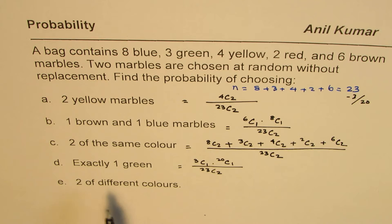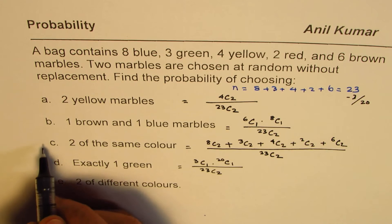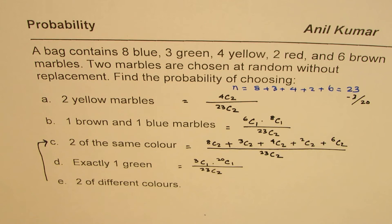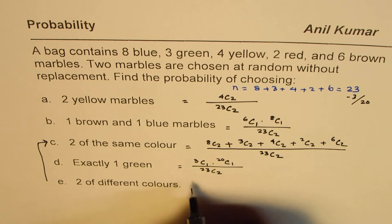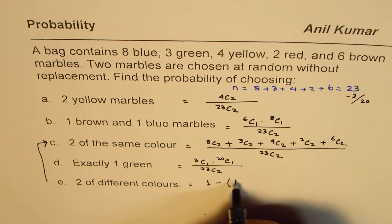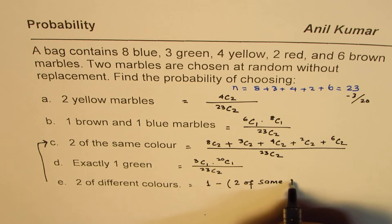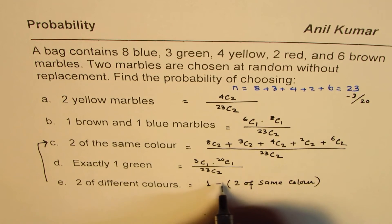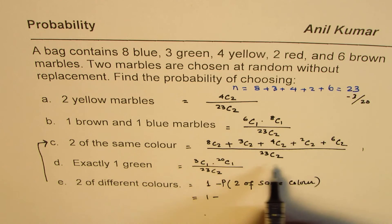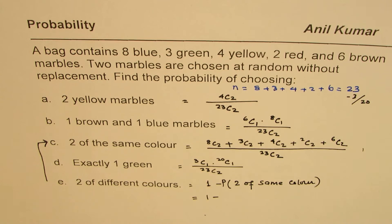The last one here is 2 of different colors. So that is a complement of this. So we are saying 2 of same color. 2 of different color will be, probability will be 1 minus 2 of same color. So probability of that. So that should be our answer. 1 minus whatever you get for this. So that is your answer.